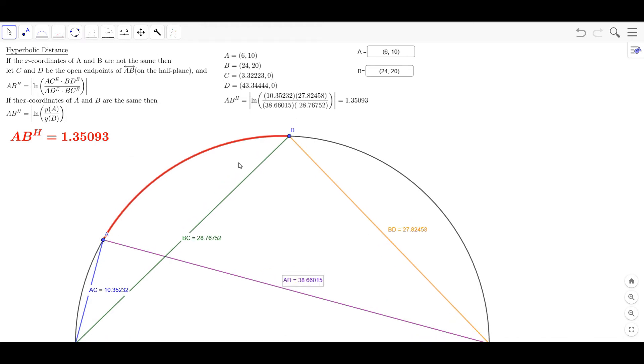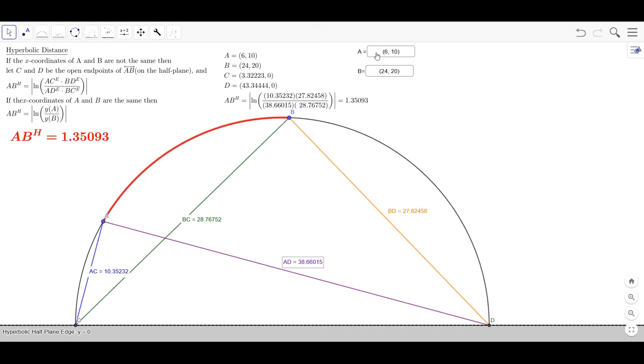So here this particular sketch is set up or this particular activity is set up so you can enter coordinates of points A and B. It will figure out the coordinates of points C and D at least approximately.